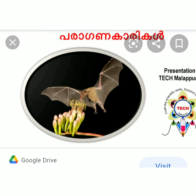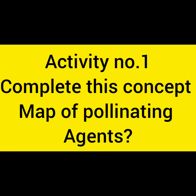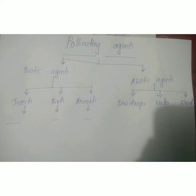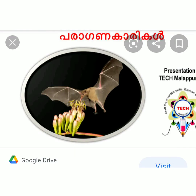Here comes our activity number one: complete this concept map of pollinating agents. The pollinating agents can be classified into two — abiotic and biotic. Biotic agents include insects, animals, and birds. Abiotic factors include dewdrops, water and wind. You need to give examples for these.